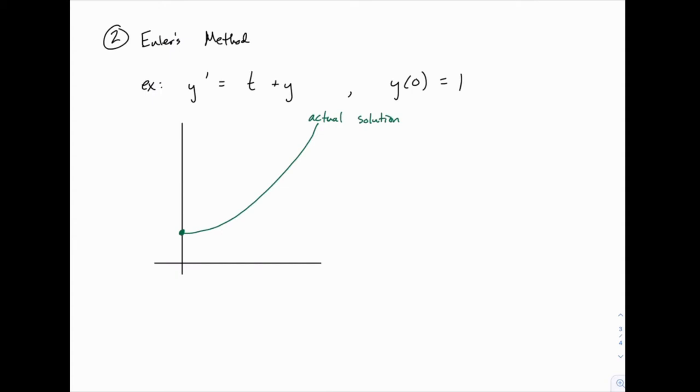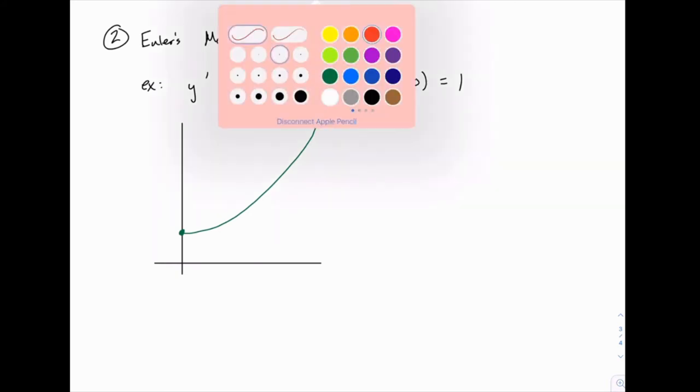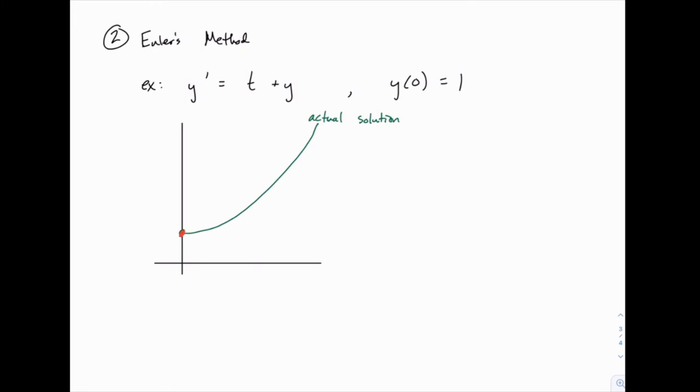We can draw a slope field, which will give us a general sense of which way this function is going, and that idea is helpful as we start thinking about using Euler's method. What we know is we know the initial condition, and we know how to find the slope at any point that we're given. So let's start there.